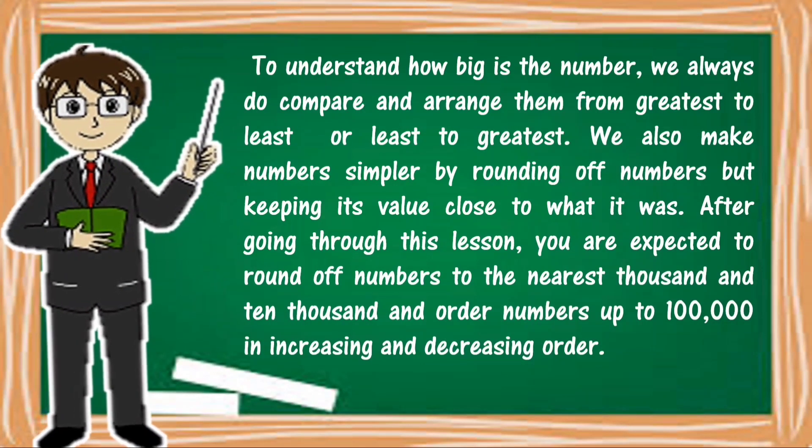To understand how big a number is, we always compare and arrange them from greatest to least or least to greatest. We also make numbers simpler by rounding off numbers but keeping its value close to what it was. After going through this lesson, you're expected to round off numbers to the nearest thousand and ten thousand and order numbers up to one hundred thousand in increasing and decreasing order.